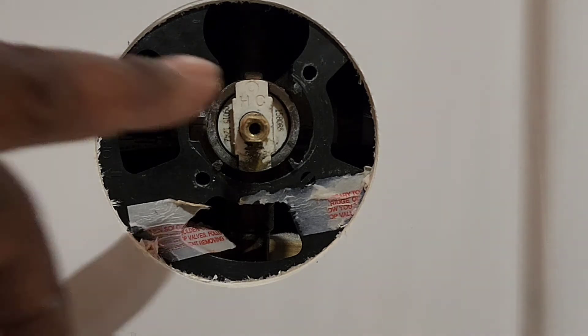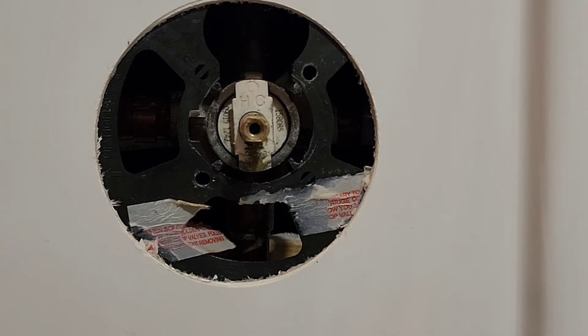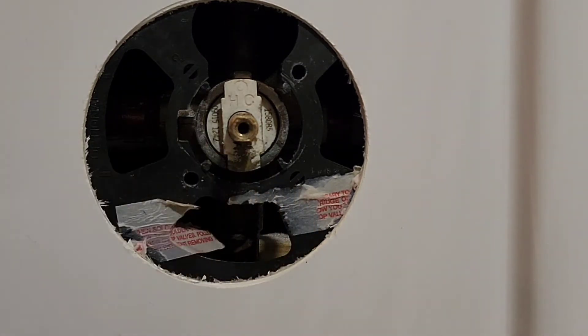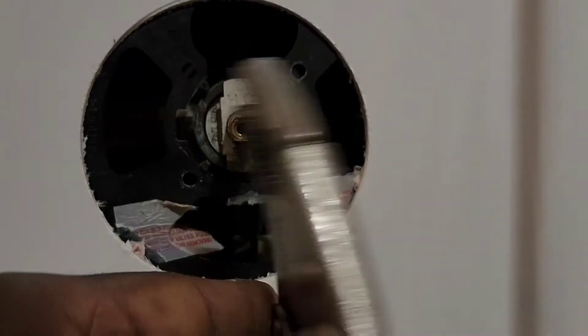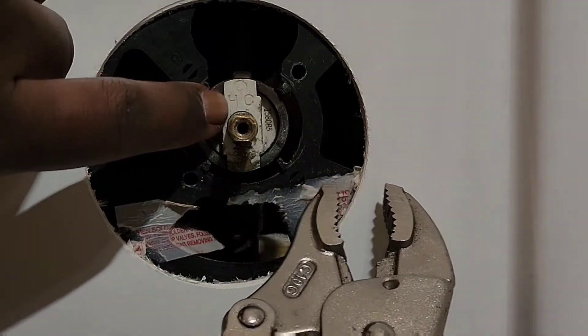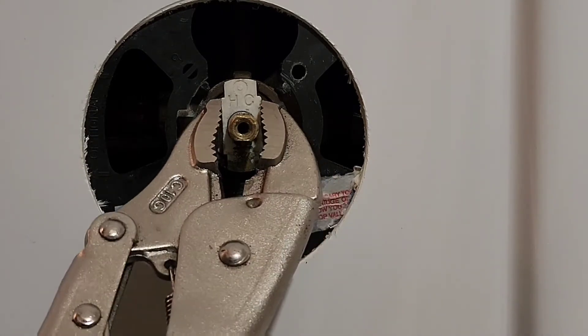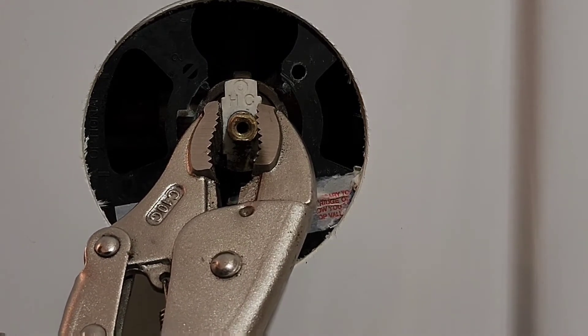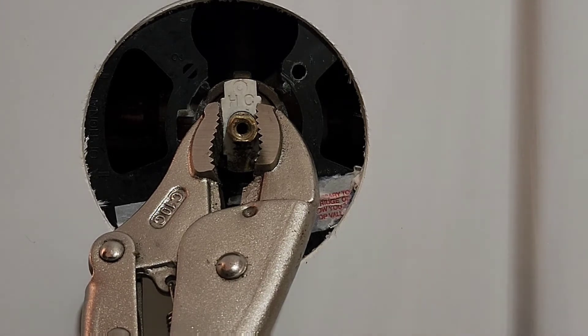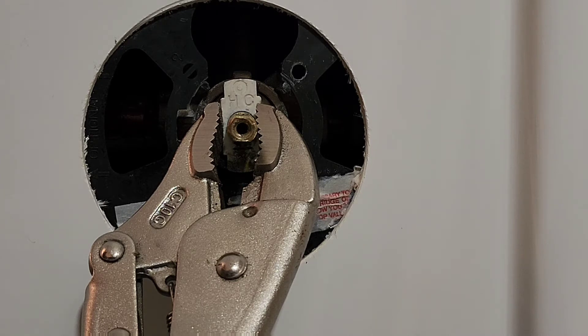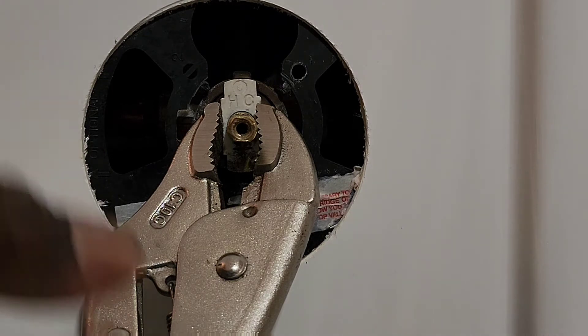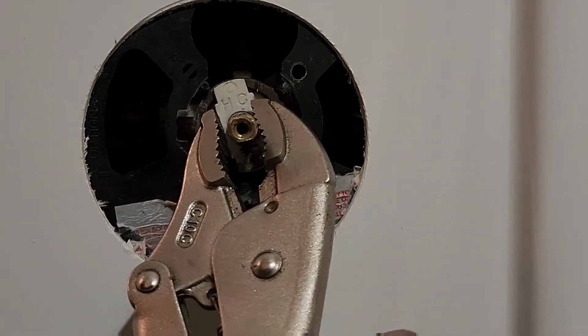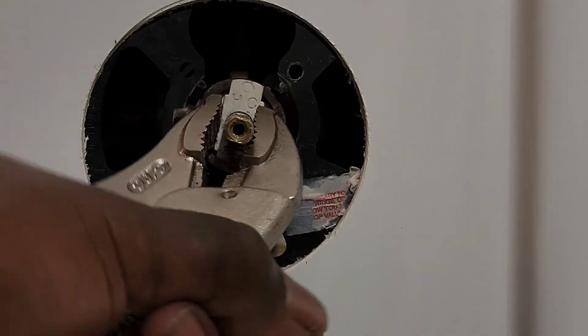Now, they actually have a tool to take this out, but I'll put that in the description if you want to purchase it, but I'm going to use a pair of channel locks. So what I'm doing is this plastic part back here, I'm grabbing it with the vice grips. So I got it locked on there. Now, depending on how long this has been in there, it's going to be very hard to get this out. So I suggest that you kind of wiggle it back and forth. Just keep wiggling it back and forth like this to get it to come out. Just keep wiggling it and pulling.